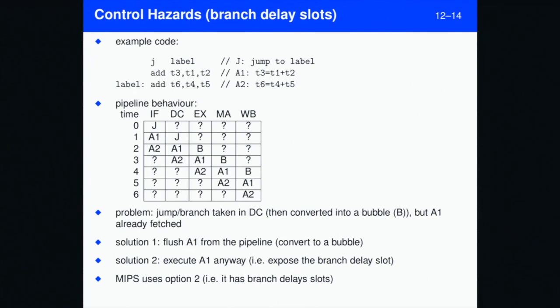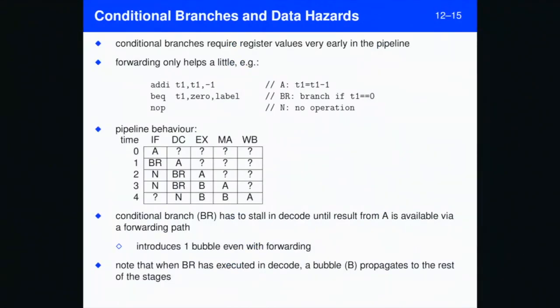Solution two is that... Sorry, I got those the wrong way around. Solution one is that we remove A1 from the pipeline, and that's what we do on ARM and Intel and RISC-V. Solution two is that we execute A1 anyway, so we expose the branch delay slot.